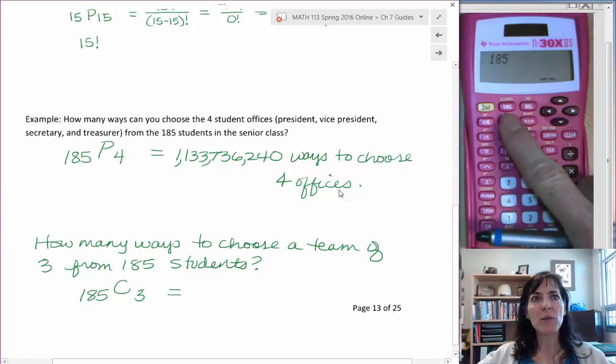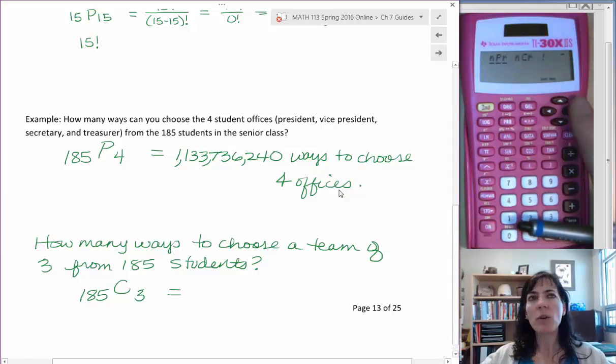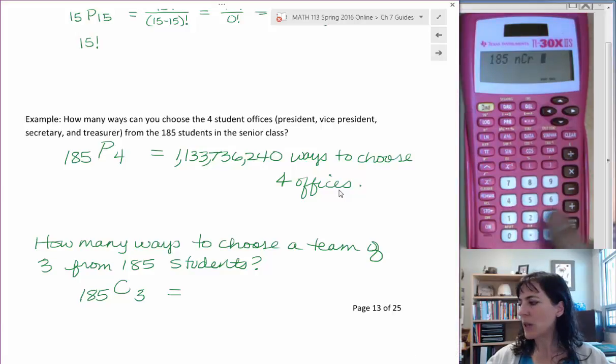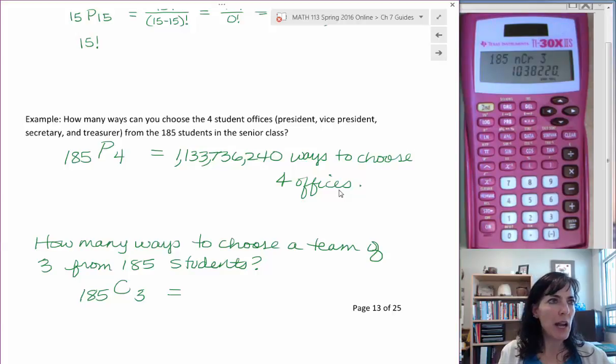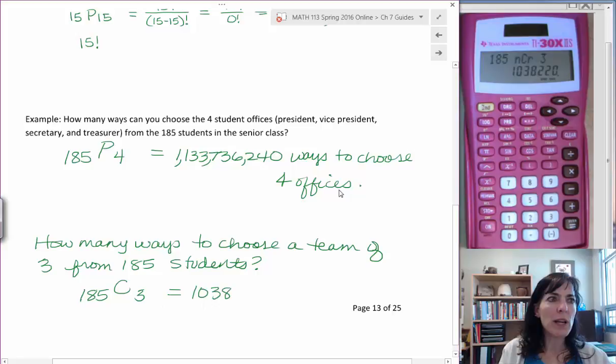And we'll do the PRB button and it's the second one over, so the nCr, and push enter. And we're choosing three, so I push the three and then enter again. And now I have one, zero, three, eight, two, two, zero.